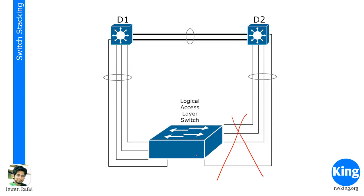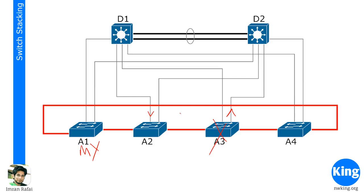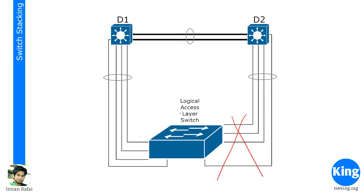There is another technology called chassis aggregation. The difference between switch stacking and chassis aggregation is that for switch stacking you need a special external module — like the Cisco FlexStack module — installed on your switch. There are FlexStack plus and many other modules, which are not part of your CCNA, so don't worry about the technical details of all stacking solutions, but just know that switch stacking requires an external module.